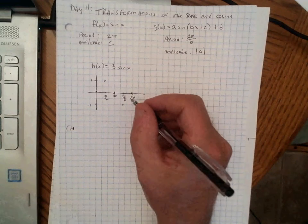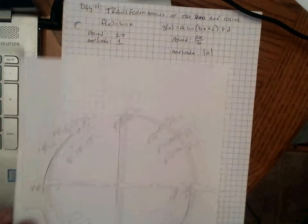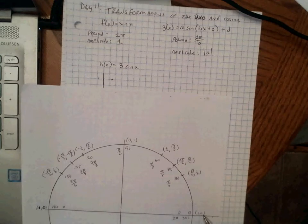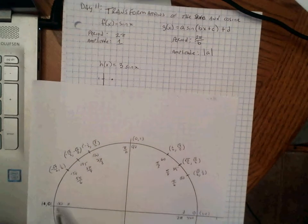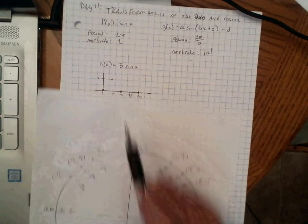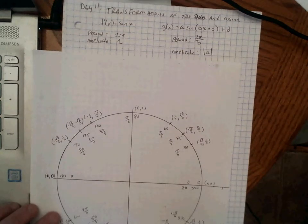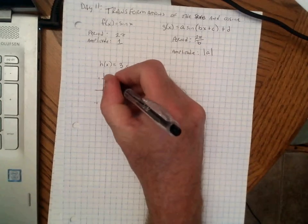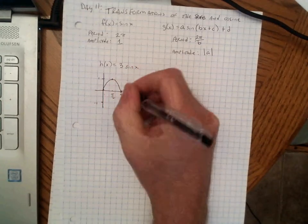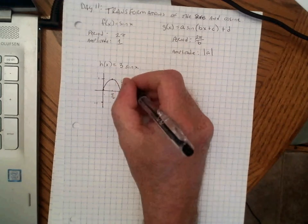We can always go back to our unit circle and get those values. Sine at 0 and 2 pi are both 0. Sine at pi is 0. Sine at pi over 2 is 1. Sine at 3 pi over 2 is negative 1. Recall, the graph looks like a wave. This is the graph of y equals sine x.